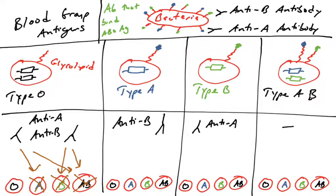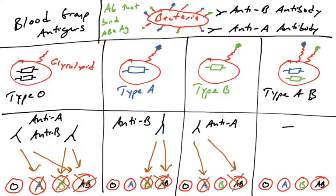A type B individual has anti-A antibodies, which would bind and elicit a Type 2 immune response against type A or type AB blood. So they can only receive type O or type B blood. The type AB individual has neither anti-A nor anti-B antibodies, so they can tolerate all blood types: O, A, B, and AB. This is why we use the terms universal donor and universal acceptor. A type AB individual is the universal acceptor — they will not reject any blood type because they lack both anti-A and anti-B antibodies. The type O individual is the universal donor because everyone can receive type O blood, as no one makes antibodies that recognize type O.